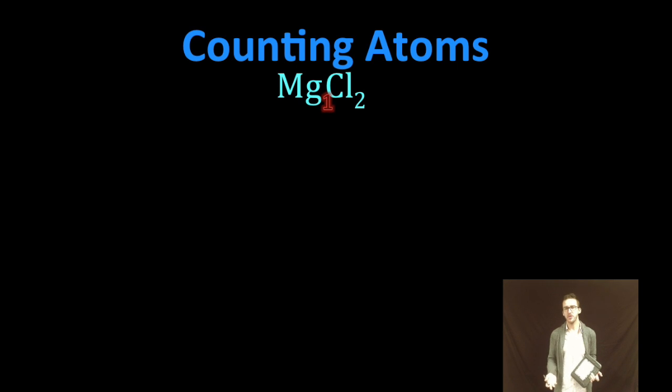remember that magnesium has that understood subscript of one. Anytime an element or ion doesn't have any subscript written by it, it's understood to be one. But essentially, what this means is we've got one magnesium ion and two chloride ions that make up the formula unit, magnesium chloride.